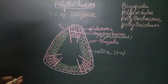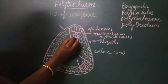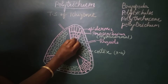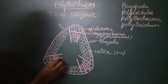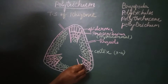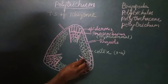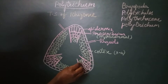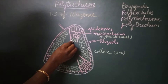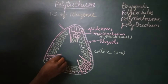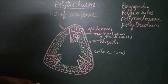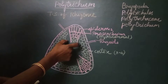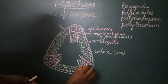Below the prosenchymatous hypodermis we find thin-walled cells. These have a larger diameter. The strand consisting of the prosenchymatous hypodermis and these thin-walled cells together is called the radial strand.